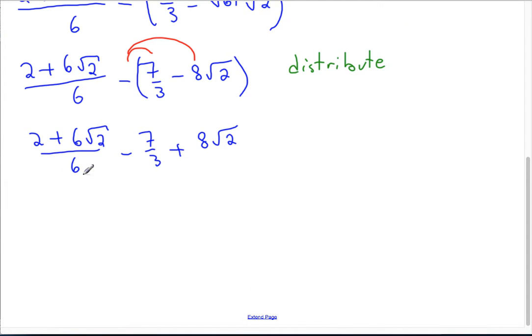You notice you've got this fraction, subtract a number fraction, adding a number with a radical. So our next job is common denominator. Our common denominator can be a 3 in this case.